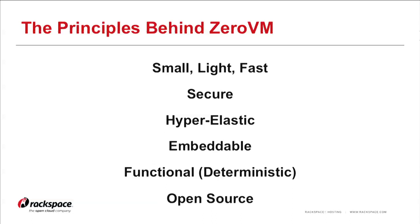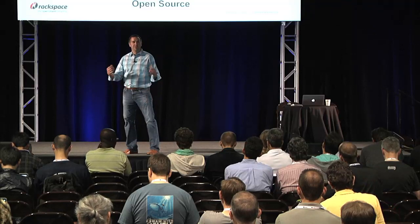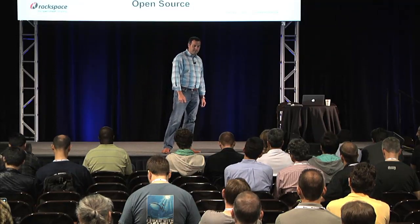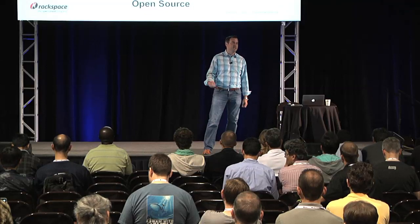ZeroVM is very secure. The security derives from the Google Native Client project. We create an inner and outer sandbox around the execution environment, and we validate all code that's going to run inside that sandbox using the stock validator from NaCl, ensuring nothing executing inside can maliciously or accidentally break out. We describe ZeroVM as hyper-elastic — you can use an entire cluster of hundreds or thousands of machines for a few seconds by creating ZeroVM instances on all those machines, networking them together, spinning them up, and disposing of them when done. Instead of paying for an hour or even a minute of a virtual machine, you can use seconds or even milliseconds of compute across large clusters.